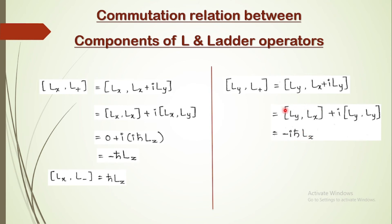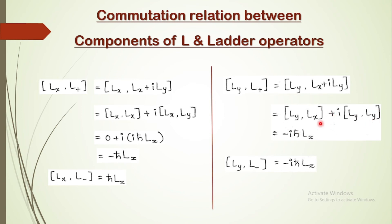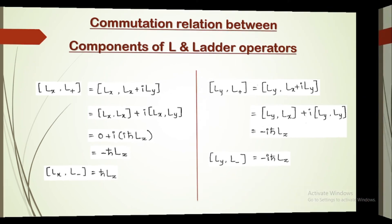The tricks which enable us to remember these commutation relations are already discussed in the last class — just follow that to understand these relations easily. The link will be given in the i-button above, do watch it. For the lowering operator, [Ly, L−] equals −iℏ·Lz as well, because only the first term remains and the second term vanishes.